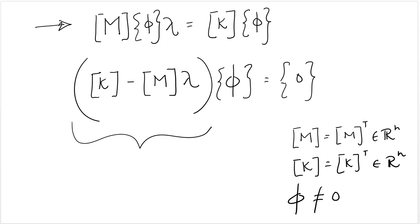If phi is not zero, that basically means that K minus phi lambda is not invertible. You can't invert it, because if you could invert it, then you would be multiplying a matrix times zero and obtaining a vector phi. That's impossible. So basically,